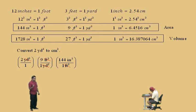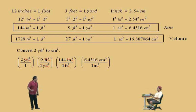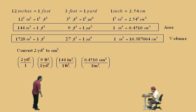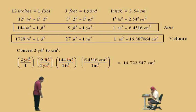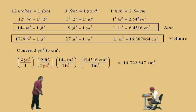Now we're going to cancel inches squared and convert to centimeters squared. In our next conversion factor, we put inches squared on the bottom and centimeters squared on top, put the numbers in the right places, and inches squared cancel out. Our units are centimeters squared — that's what we wanted. Now all you have to do is multiply: put the numbers in your calculator and get the answer, which is 16,722.547 centimeters squared. That answer is rounded to the nearest thousandths, so we'll go ahead and circle our answer.